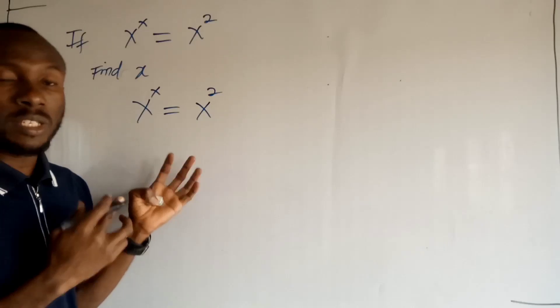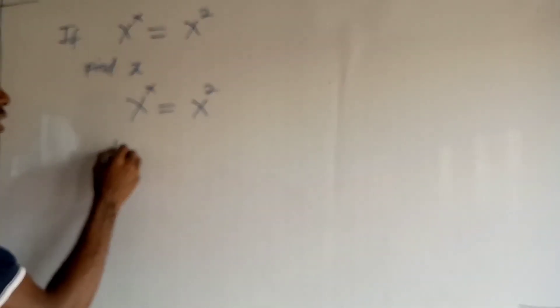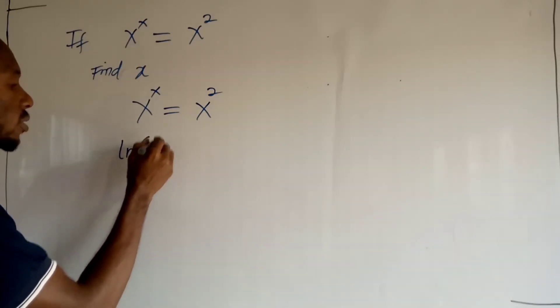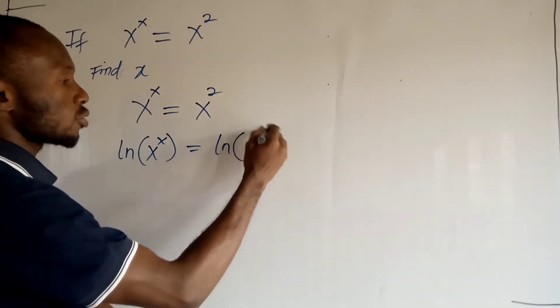The first thing I want to do is to take the natural logarithm of both sides. Now if I take the natural logarithm of here, I will have x to the x. Then I take the natural logarithm of this, I will have x to the 2.